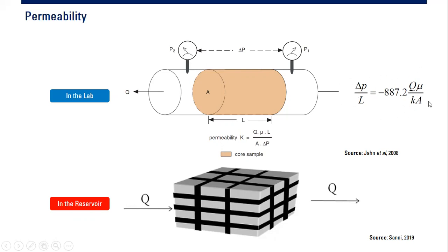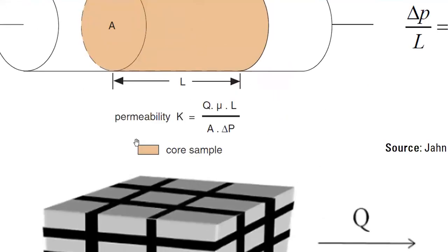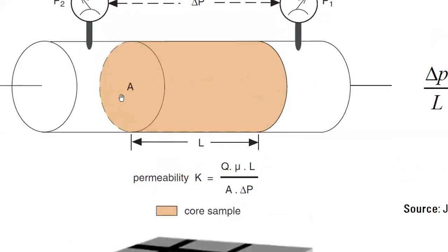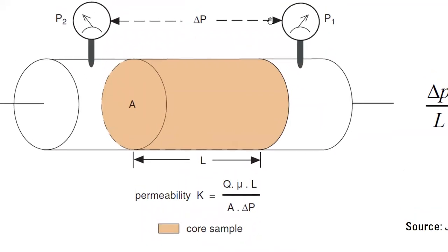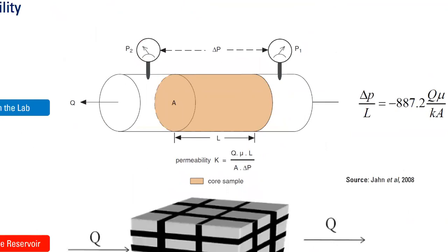We can arrange the mathematical formulation so we can get the permeability. Permeability is the flow rate multiplied by viscosity multiplied by the length of the core, divided by the area of the flow, the cross-sectional area of the pipe, multiplied by pressure difference. That's K permeability. This is quite simple.